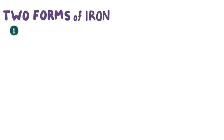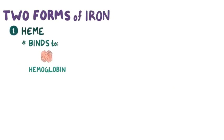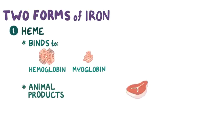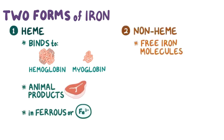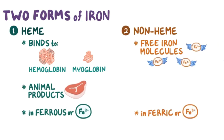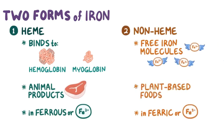Our diet contains two forms of iron. The first is heme iron, or iron bound to hemoglobin or myoglobin, and that comes from animal products like meat. Heme iron is in the ferrous, or Fe2+ state. The other form is non-heme iron, which is free iron molecules in the ferric, or Fe3+ state. Non-heme iron comes from plant-based foods like spinach and beans.